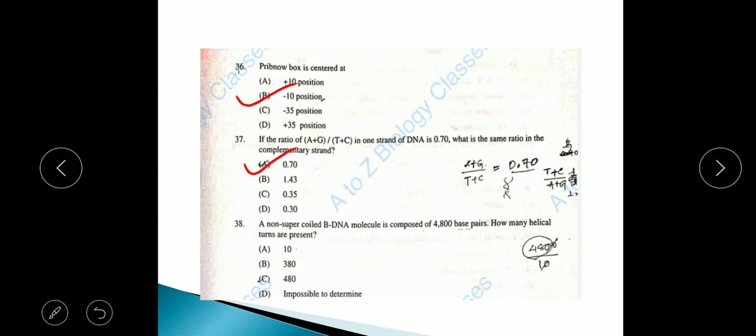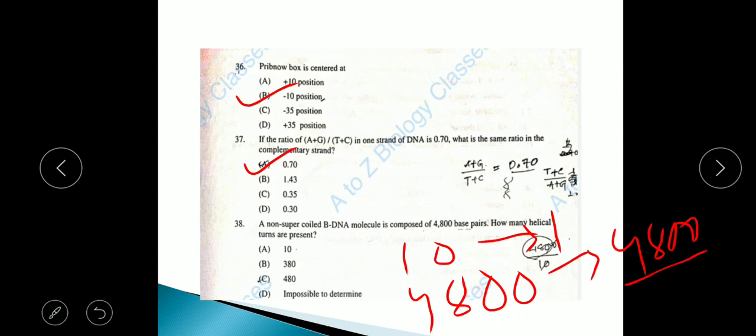Question 38: A non-supercoiled B-DNA molecule is composed of 4800 base pairs. How many helical turns are present? For 10 base pairs there is one turn. So for 4800 base pairs, 4800 divided by 10 equals 480. The answer is option C, 480.